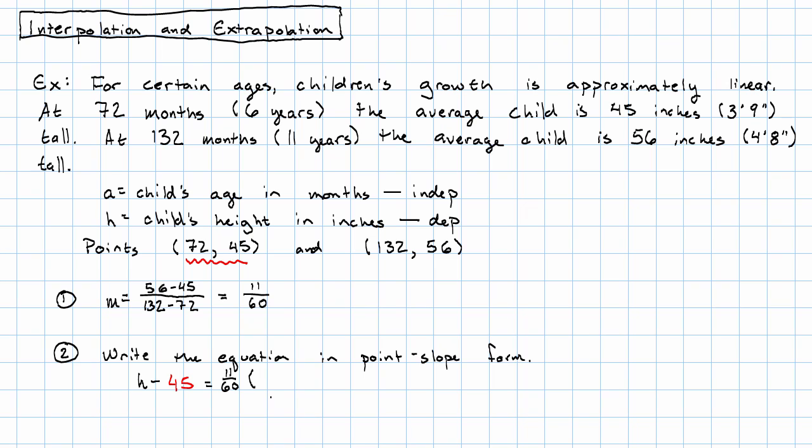We'll have h minus the given h is the slope we found, 11 sixtieths times a minus the given a. Now, there's a question, though, for what values of a and h does this really make sense?